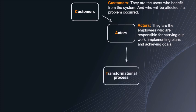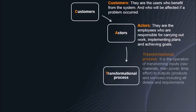Transformational Process. It's the operation of transforming inputs — like raw materials, manpower, time, and effort — to outputs such as products and services, including all details and requirements.